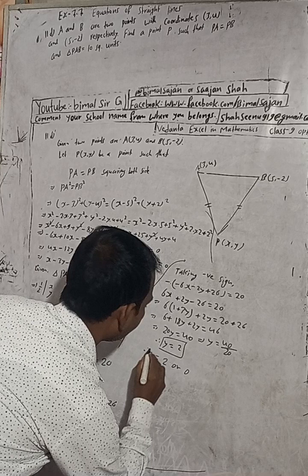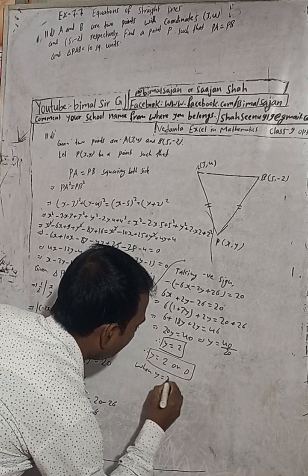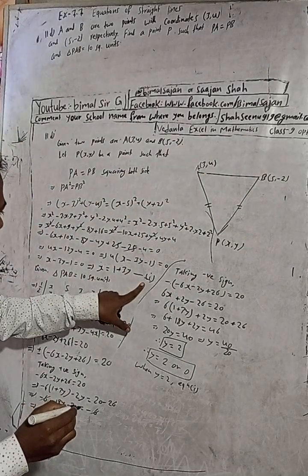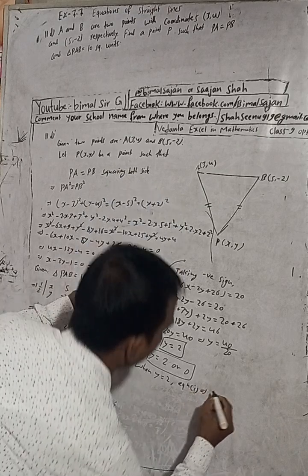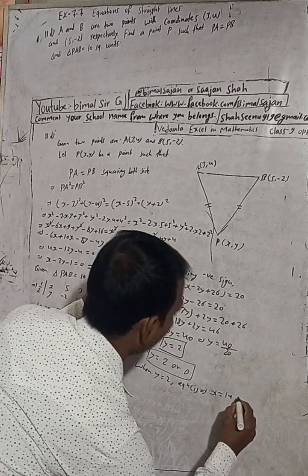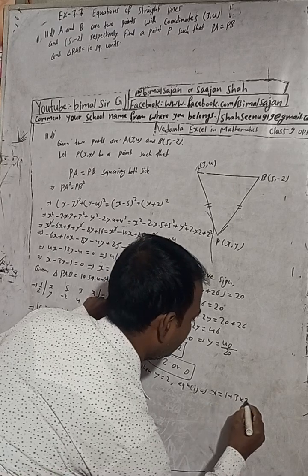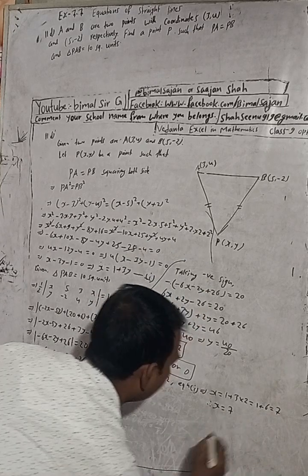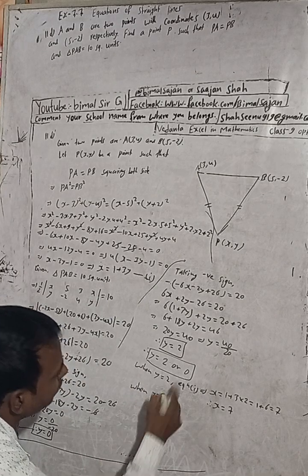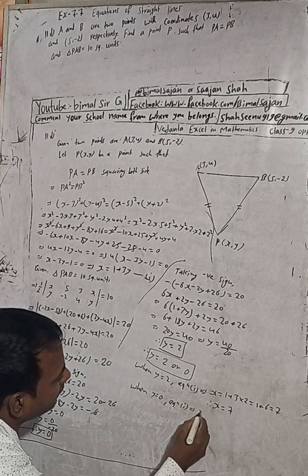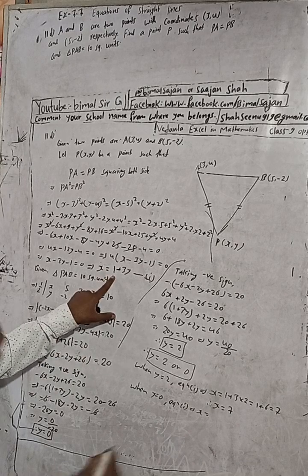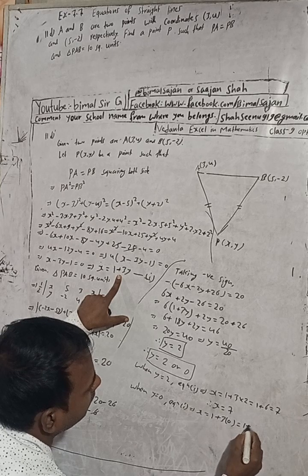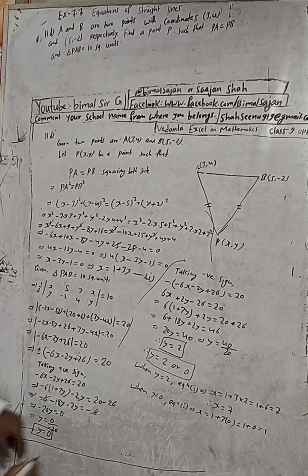Now when y is equal to 2, equation one implies x is equal to 1 plus 3y. With y equal to 2: x equals 1 plus 3 into 2, which is 1 plus 6 equals 7. Therefore x is equal to 7.